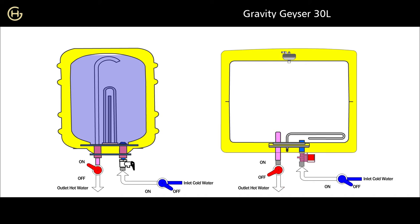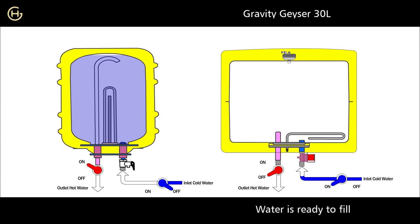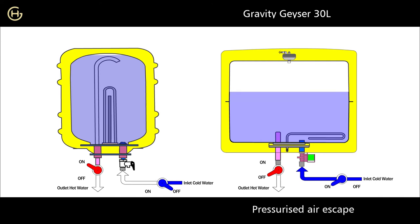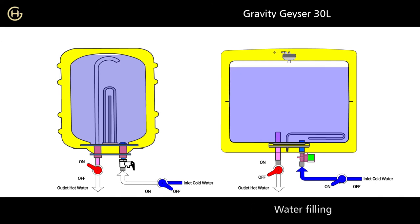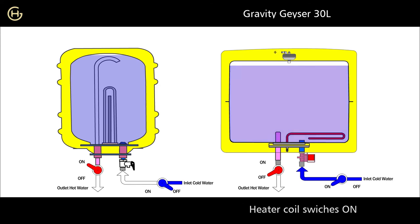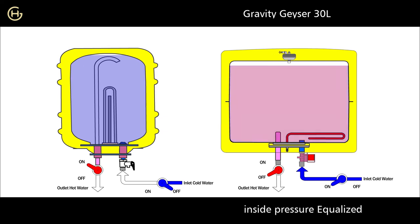In our gravity storage geyser, when the cold water tap opens, water is ready to fill. When the solenoid valve opens, even if the outlet hot water tap is closed, cold water flows inside the tank and pressurized air escapes through the pressure relief valve. The water is filled completely or partially as per user requirement. The solenoid valve then closes the inlet cold water for the set volume, the heater coil switches on and heats the water to the set temperature, and inside pressure is equalized to surrounding pressure.